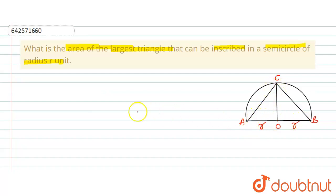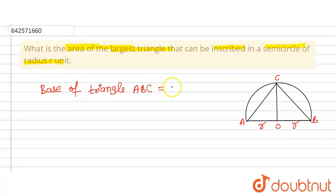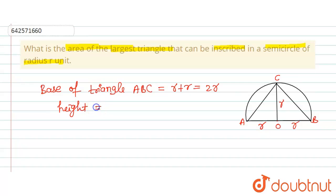You can clearly see that AB is the base of triangle ABC. The base of the triangle equals r plus r, which is equal to 2r — we take the base as the diameter of the circle. OC is also a radius of the semicircle, and it is perpendicular to AB, so the height is equal to r.